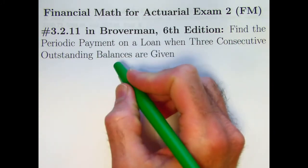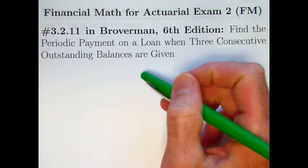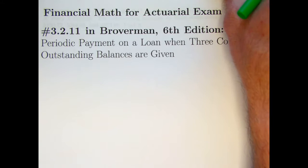We'll be finding the periodic payment, in this case a semi-annual payment, on a loan with three consecutive outstanding balances that are given.